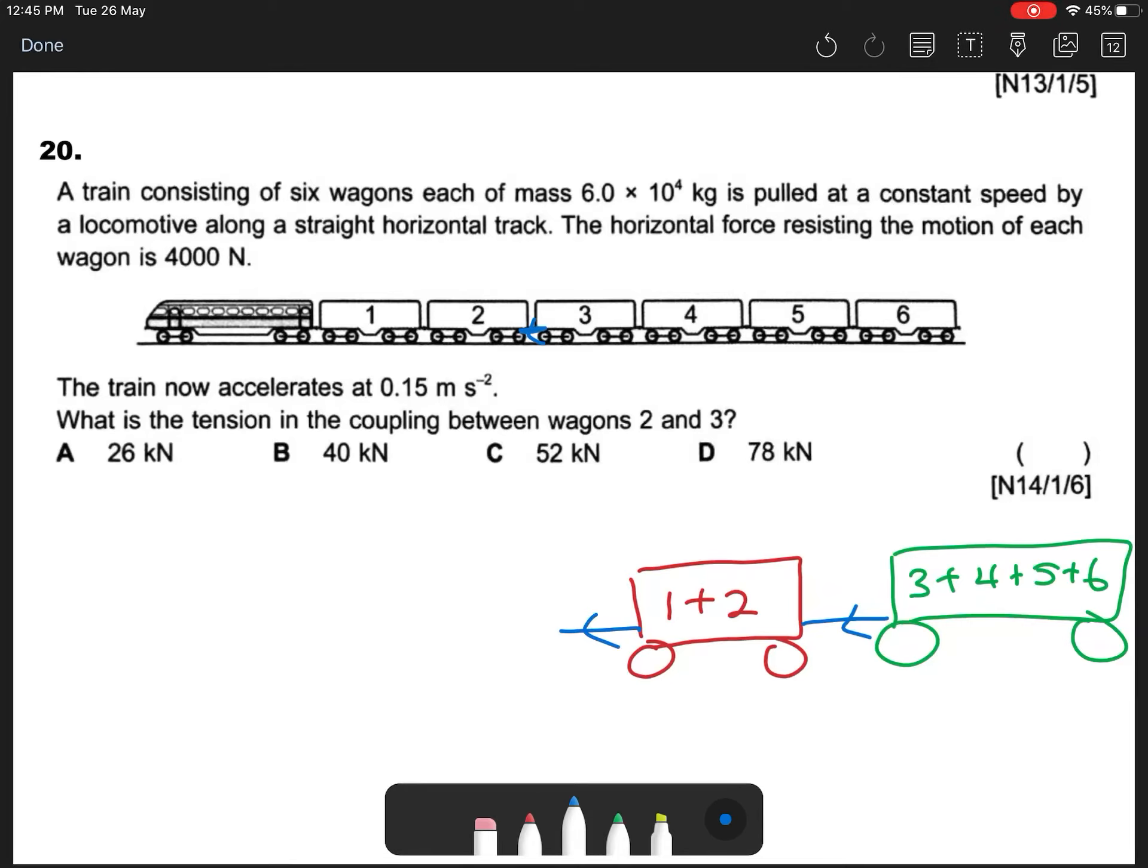Okay, question 20, 2014. A train consisting of 6 wagons, each of mass 6 × 10^4 kg, is pulled at a constant speed by a locomotive along a straight horizontal track. The horizontal force resisting the motion of each wagon is 4000 N.